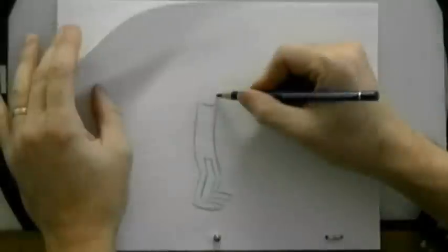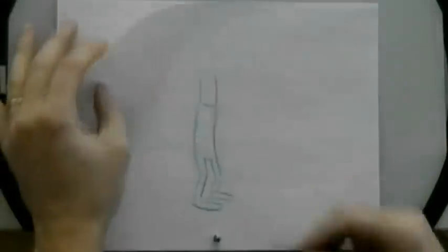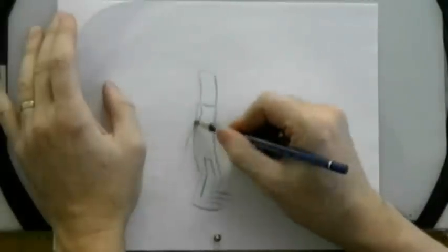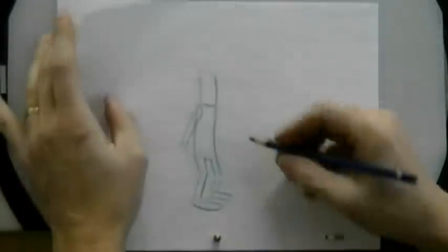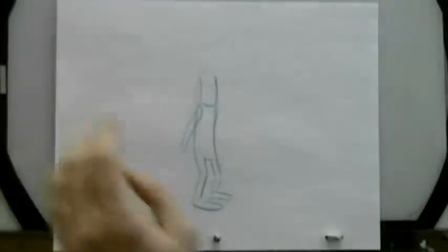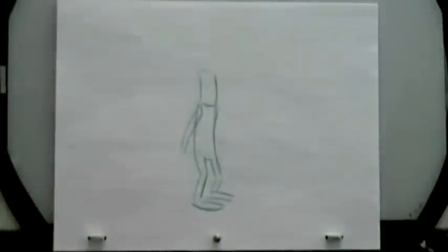And bring the head forward and down a little bit. And get the shoulders to reverse direction. I'm doing the seaweed action on the arm there. And then back up to the high point.